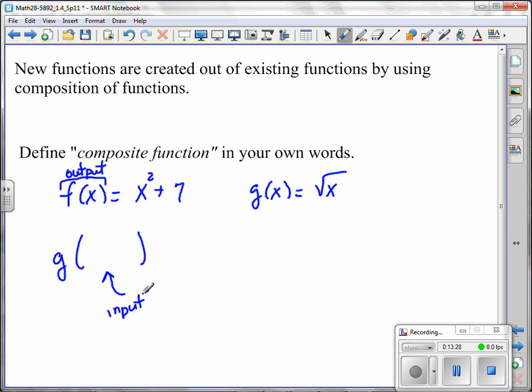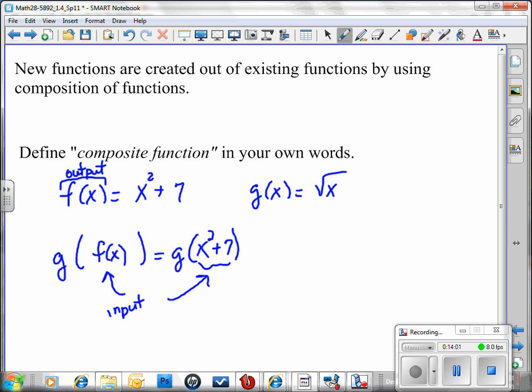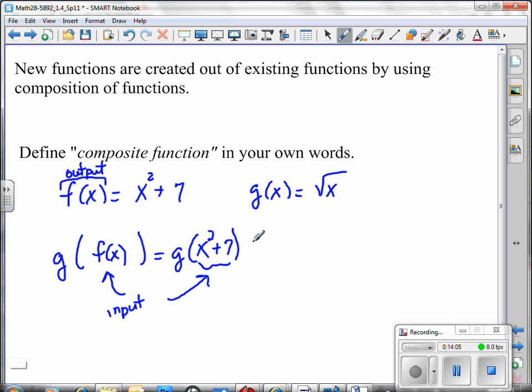I can put anything I want in there. I could even put in f of x. So I'm putting in the output of the function f, but it becomes the input. Now, another way of saying that would be g of, well, what's another way of writing f of x? Another way of writing that output, x squared plus 7. Again, this whole quantity is an input when it's placed as it is in function g.